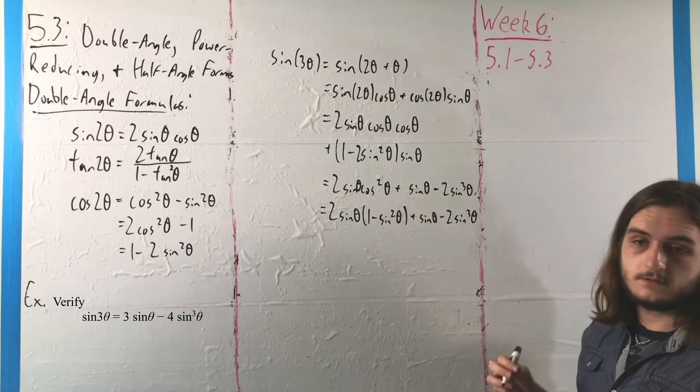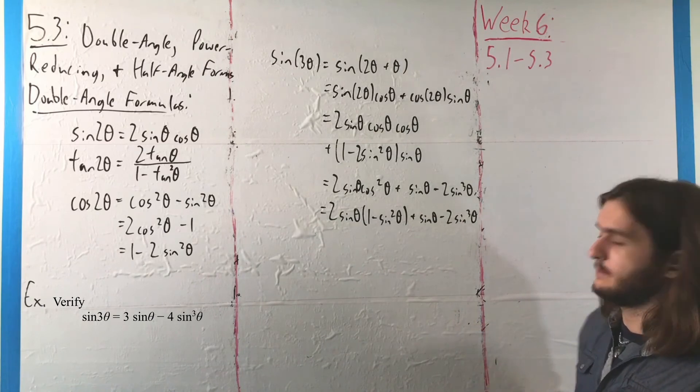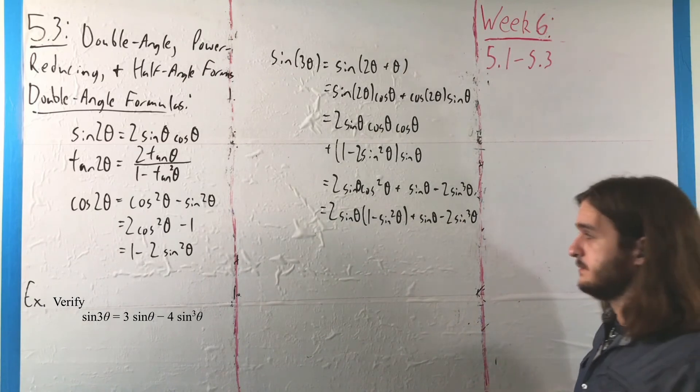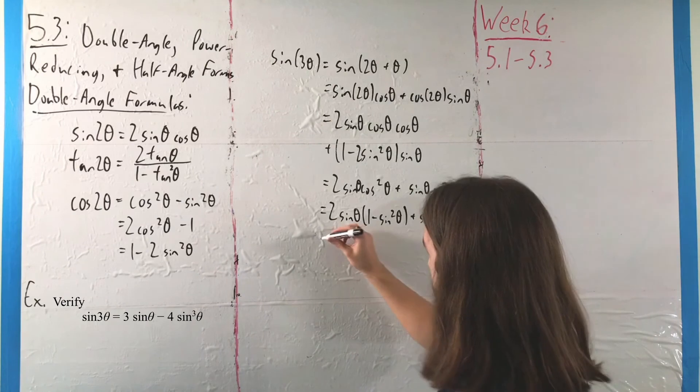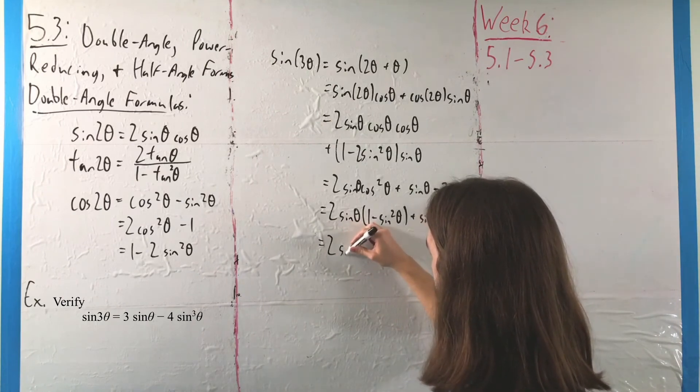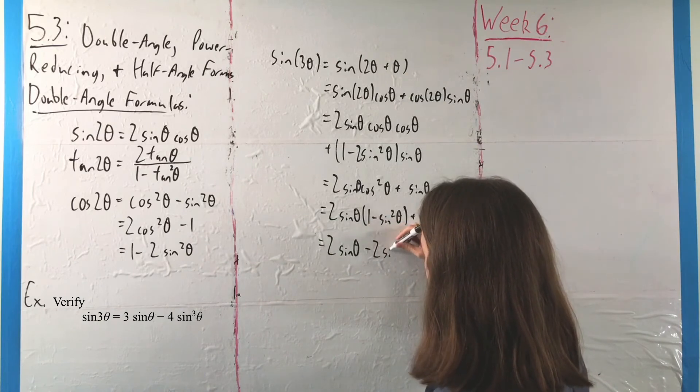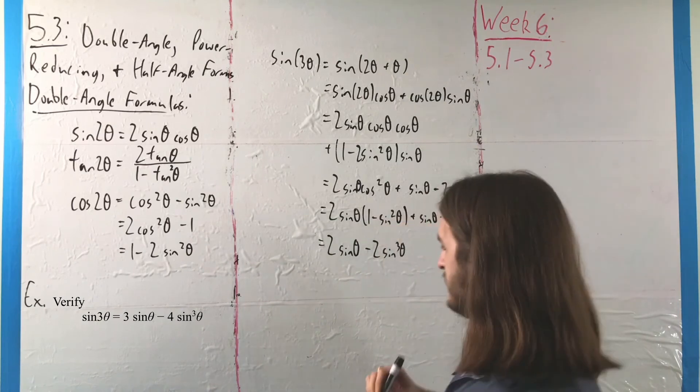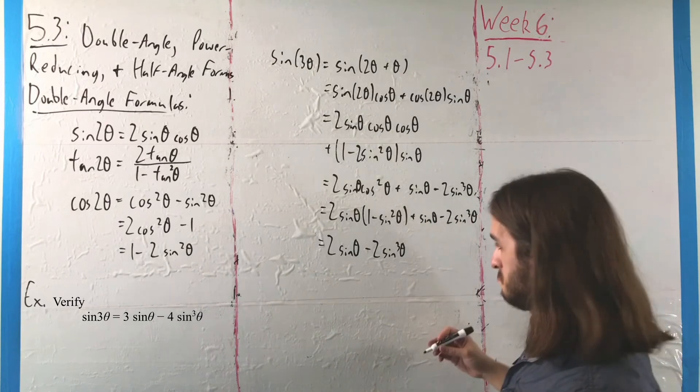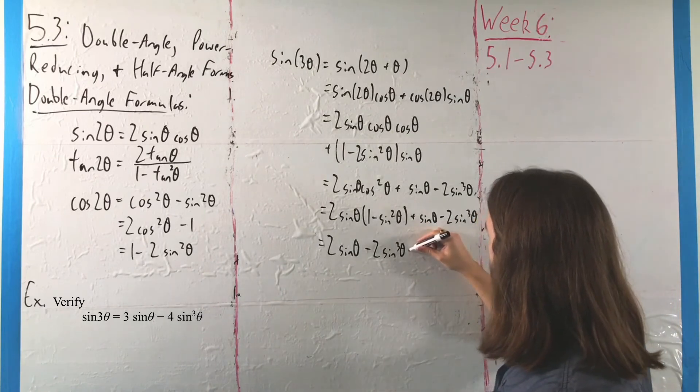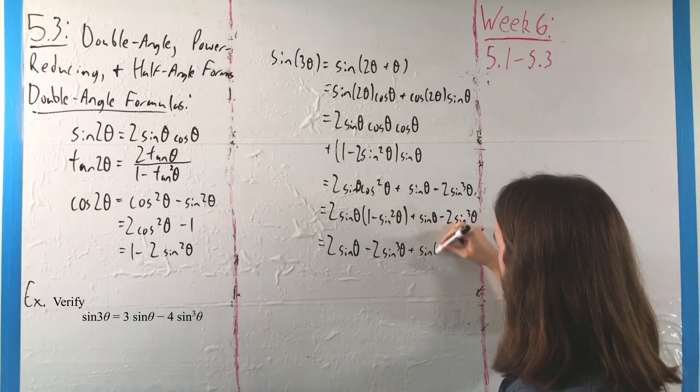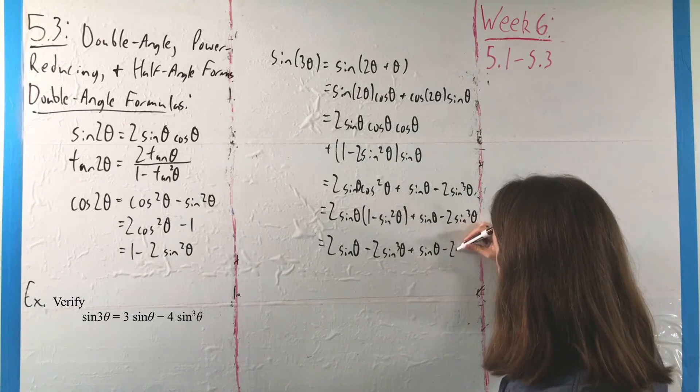Now we're going to multiply this in and we're going to see that a little bit of magic happens and we get to where we need to be because we'll have 2 sine theta times 1 minus 2 sine theta times sine theta. So you get a sine cubed of theta.